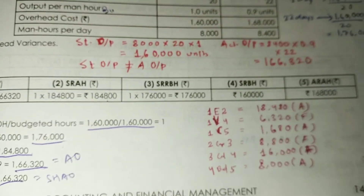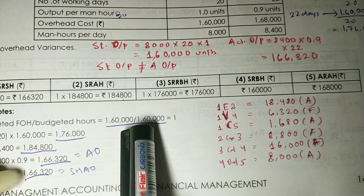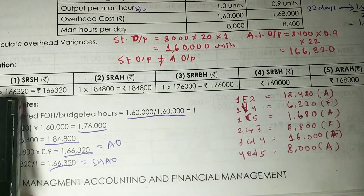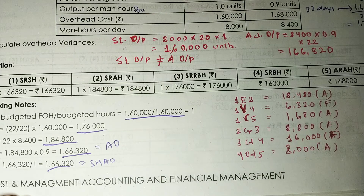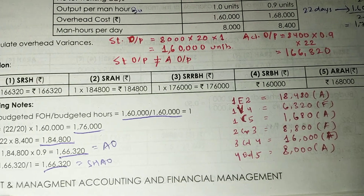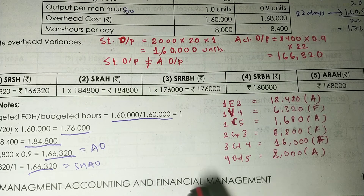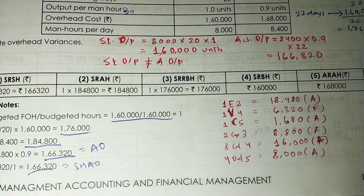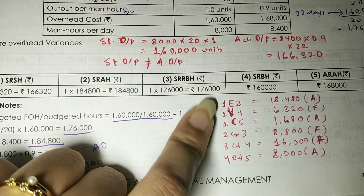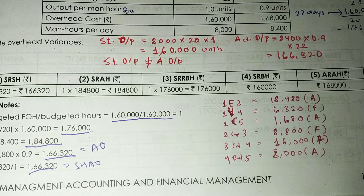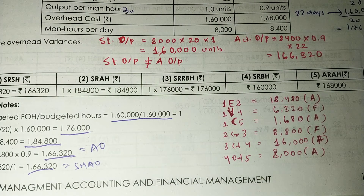We have now calculated all the required figures: SR, SH, SR × Actual Hours, SR × RBH, and Actual Hours. From these you can easily calculate all the variances: Fixed Overhead Efficiency Variance, Volume Variance, Cost Variance, Capacity Variance, Calendar Variance, and Budgeted Variance. I hope Illustration 12 is clear.